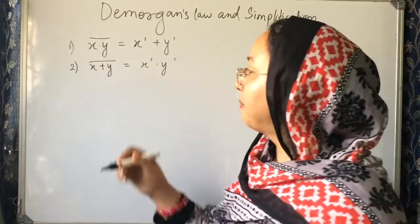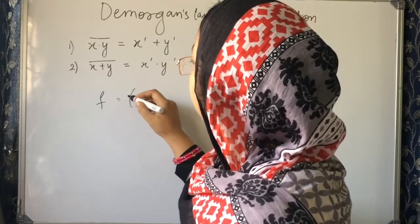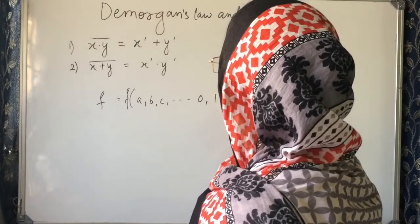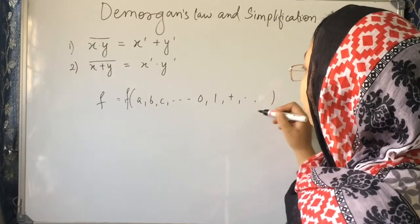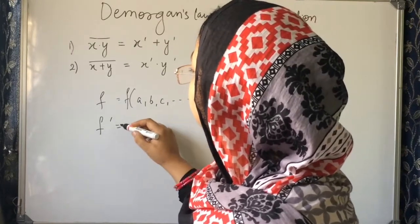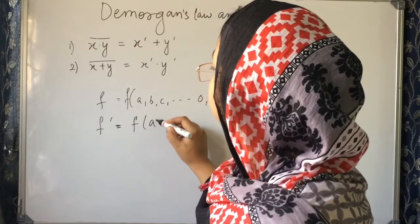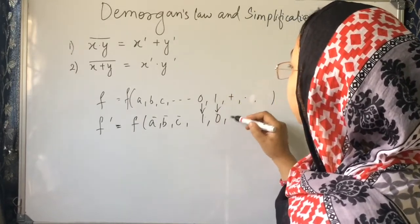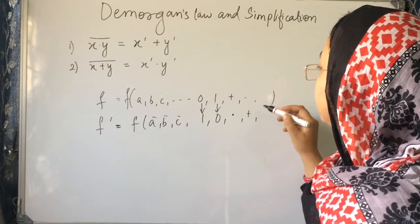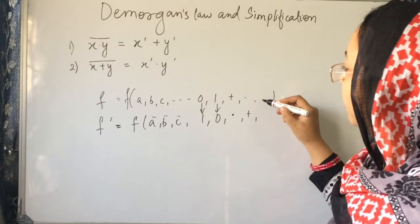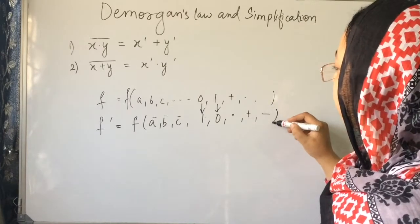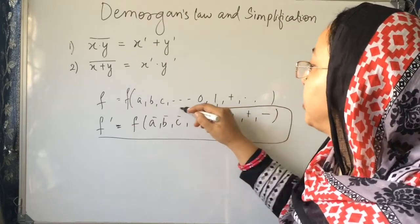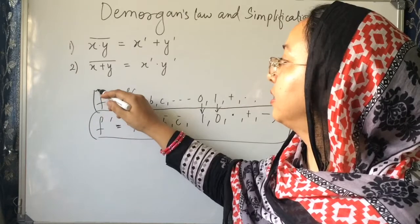That is known as Dual Function. It means if you have a function in the form of a, b, c with dot, 0, 1, and plus, then its dual function will be: a bar, b bar, c bar, 1, 0 — where 0 is converted to 1, 1 is converted to 0, plus dot is converted to dot, dot is converted to plus, and non-complemented variables become complemented. Any expression you choose, you will see that this is true in every case.